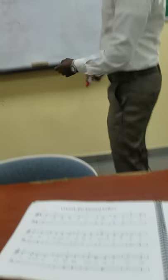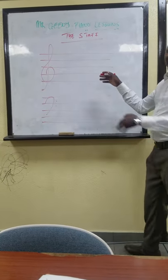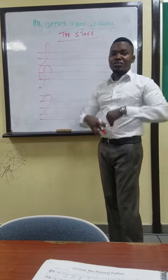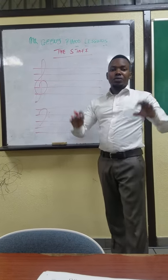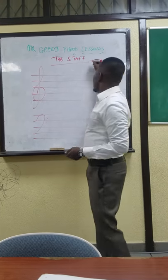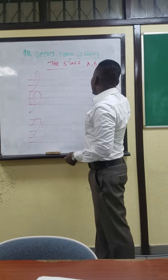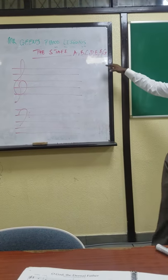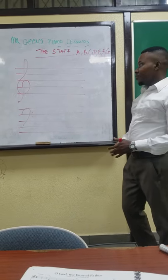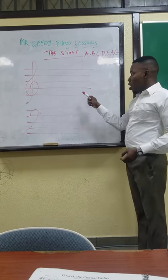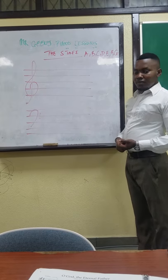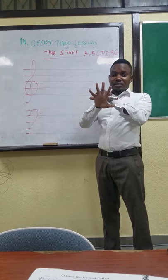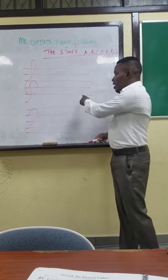Today we will explain each and every line. Now each line and space has a name. In music, we don't use words to express the names, but we use alphabets — the first seven alphabets: A, B, C, D, E, F, and G. These are the seven alphabets we use in music. Now each of these alphabets represents a line or a space. Remember, a staff comprises five lines and four spaces, and each alphabet follows alphabetical order.